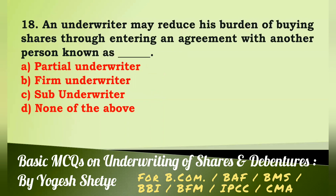Question 18: An underwriter may reduce his burden of buying shares by entering an agreement with another person known as — (a) partial underwriter, (b) firm underwriter, (c) sub underwriter.